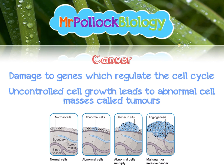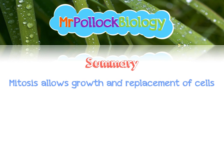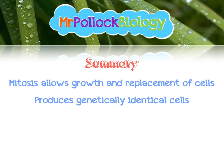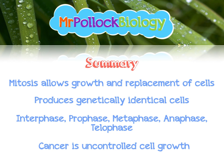In summary: mitosis is really important because it allows the growth and replacement of cells. It produces genetically identical daughter cells. The five stages — interphase, prophase, metaphase, anaphase, telophase — and what happens in them, you need to know. And finally, cancer is uncontrolled cell growth leading to tumours.